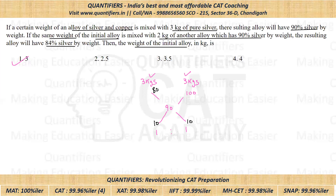Now we have to see whether it satisfies the other case. I will solve the second case, assuming that there is 80% silver in the initial alloy. This initial alloy with 80% silver is now mixed with 2 kg of another alloy which has 90% silver — and mind you, this quantity of 2 kg is given. The resulting alloy will have 84% silver.